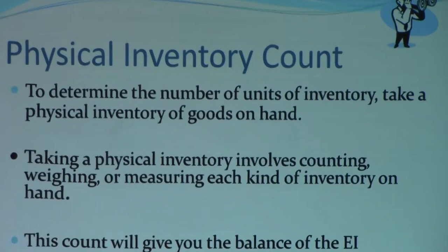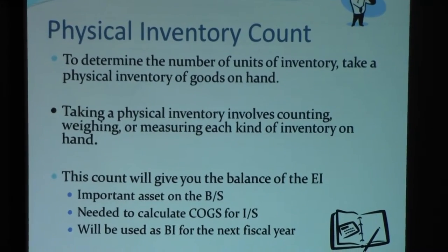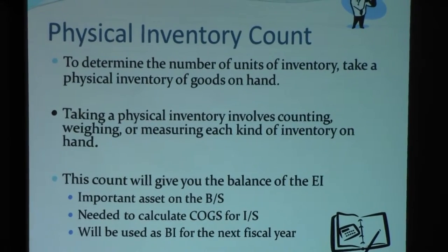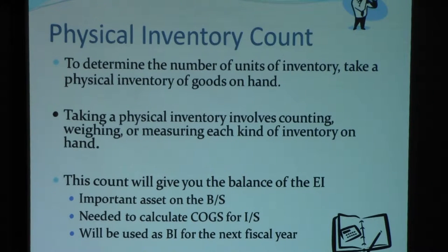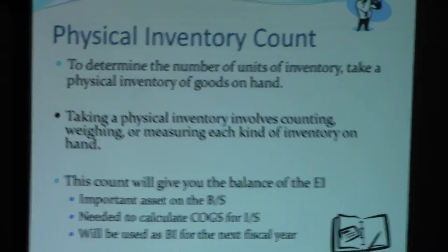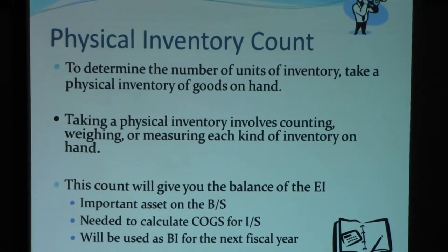So how do we arrive at ending inventory? We do a physical inventory count, which means businesses using this accounting system have to determine the number of units left over for each item they're selling. They also know the price for each item they purchased. Taking up physical inventory can involve counting, weighing, or measuring each kind of inventory on hand for that business.